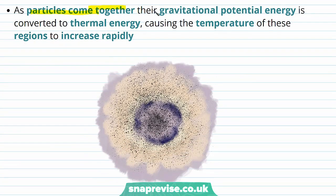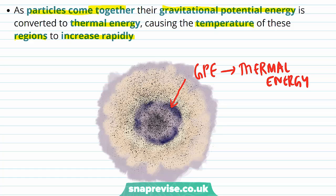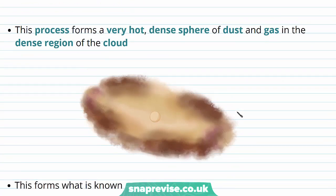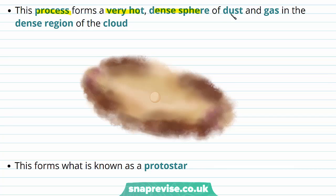As particles come together, their gravitational potential energy is going to be converted to thermal energy, which causes the temperature of these regions to increase rapidly. Consider a dust particle coming from the outer region of the cloud towards this area — it's going to have gravitational potential energy being converted into thermal energy, resulting in a higher temperature in this area. This process forms a very hot, dense sphere of dust and gas in the dense region of the cloud, which we call the core, and this forms what is known as a protostar.